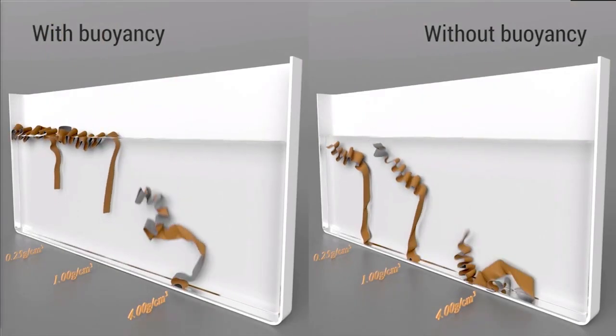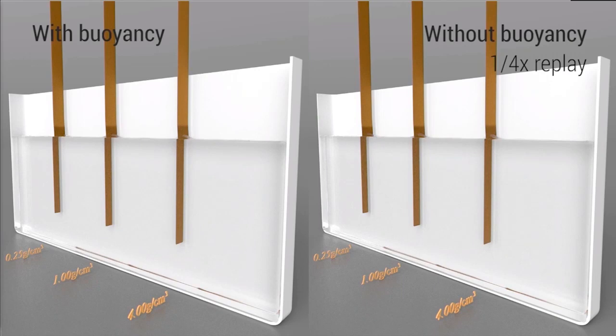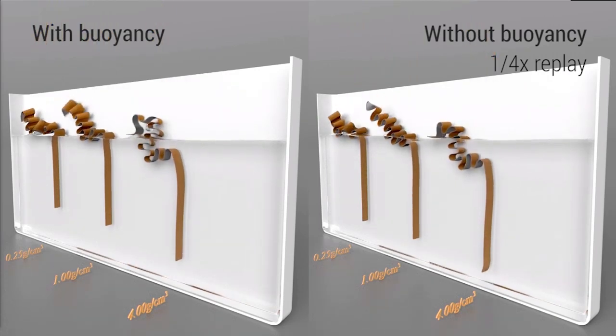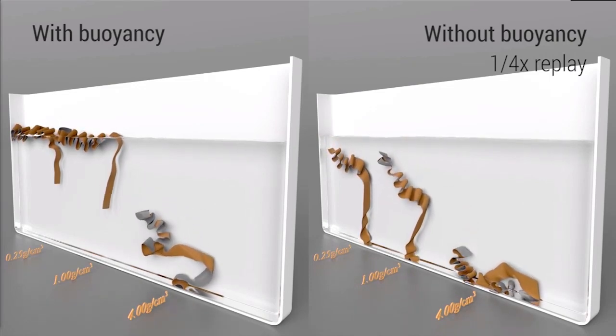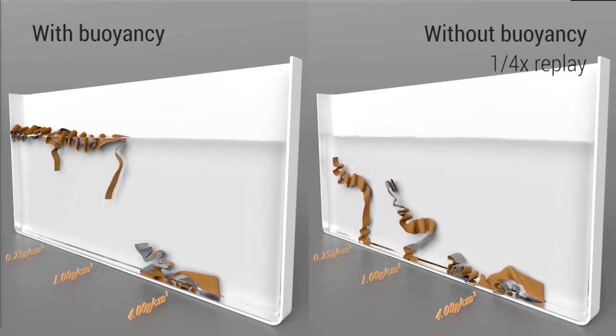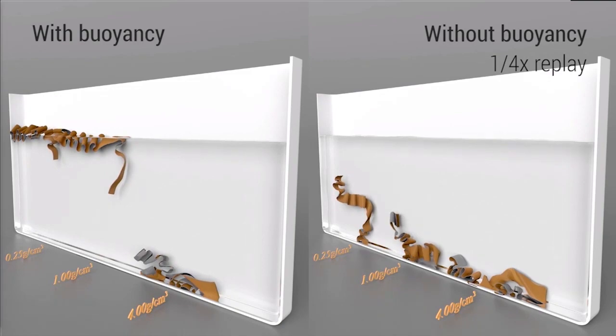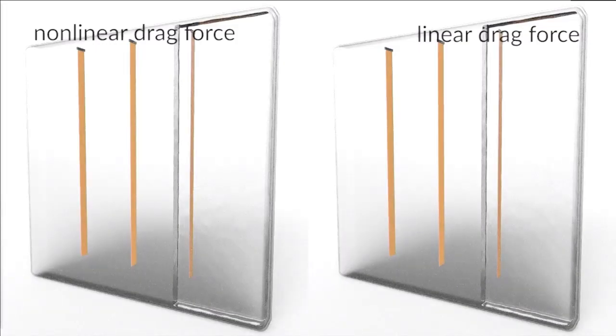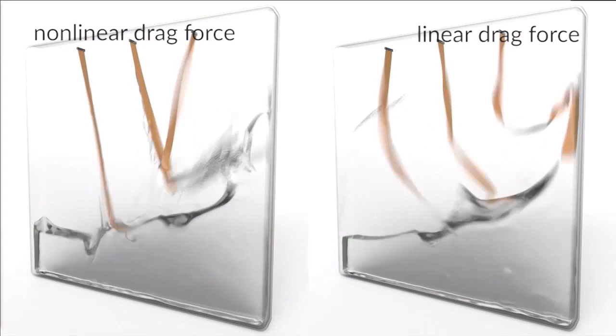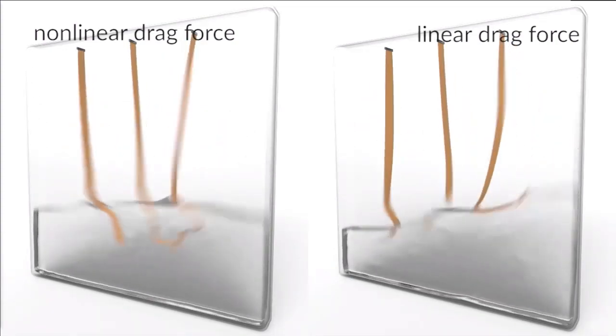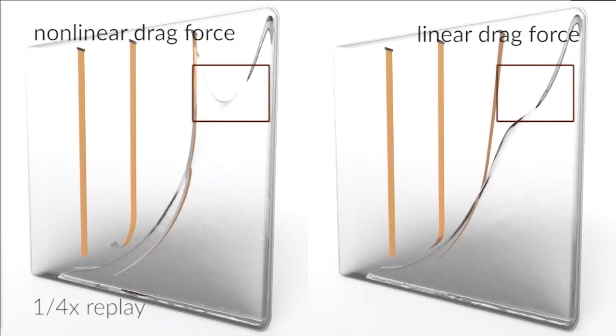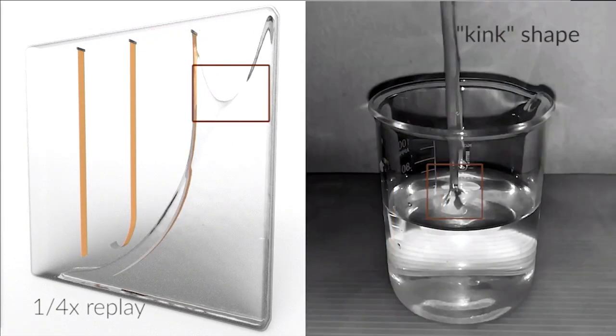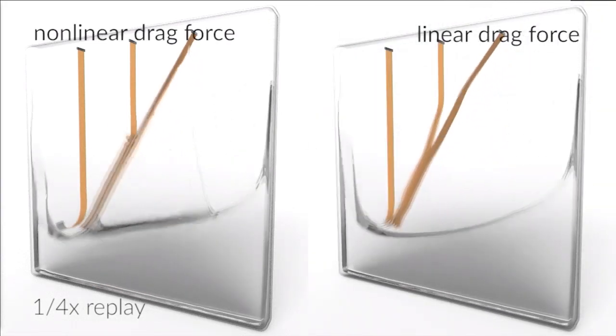For example, here we compare the simulation with and without buoyancy force applied to the cloth, using fabrics with different mass densities. With the correct pressure gradient applied to the fabrics, the left one rises, the middle one drifts, and the right one sinks. Also, the non-linearity of drag force has a significant impact. The most obvious distinct visual phenomenon here is the formation of kinks around the regions where the relative velocity is large, which also appear in real experiments.